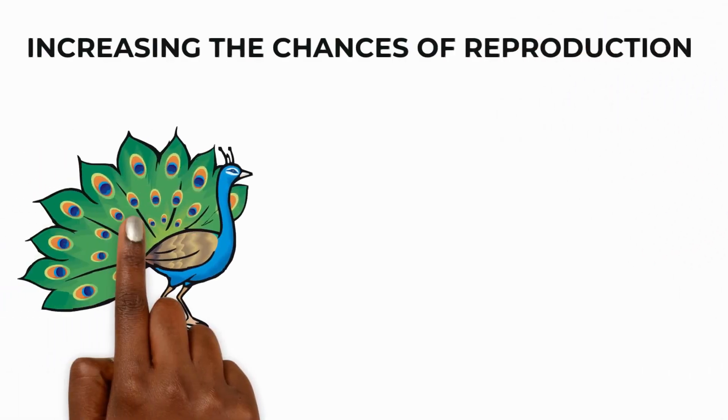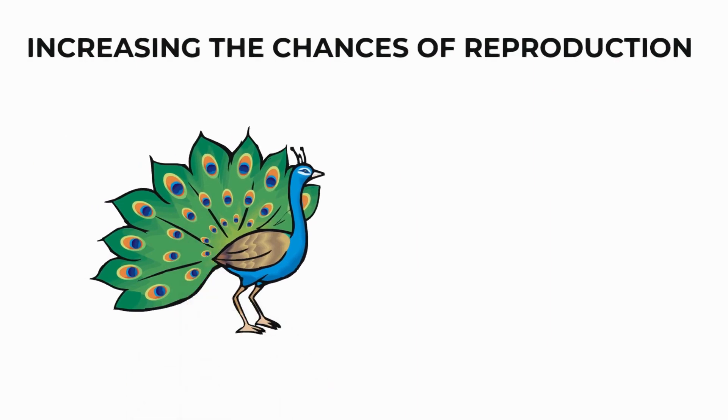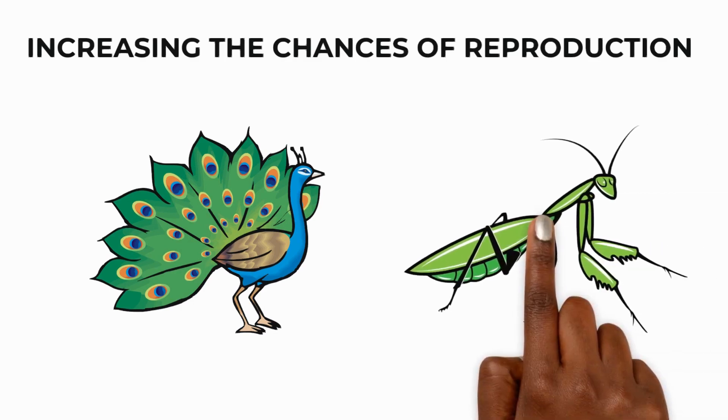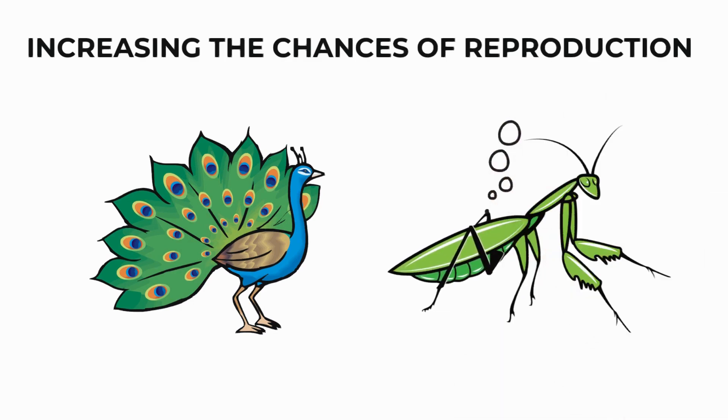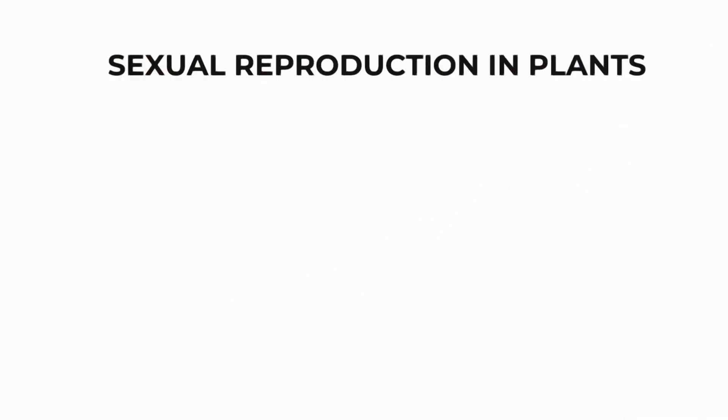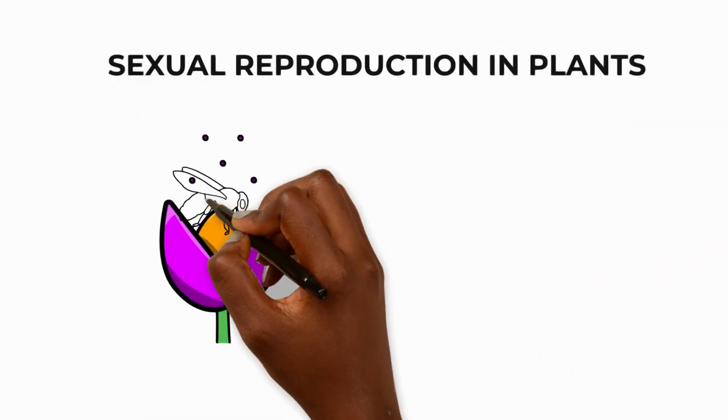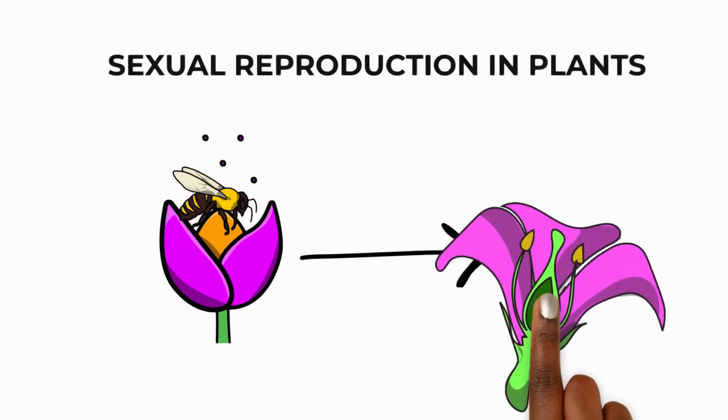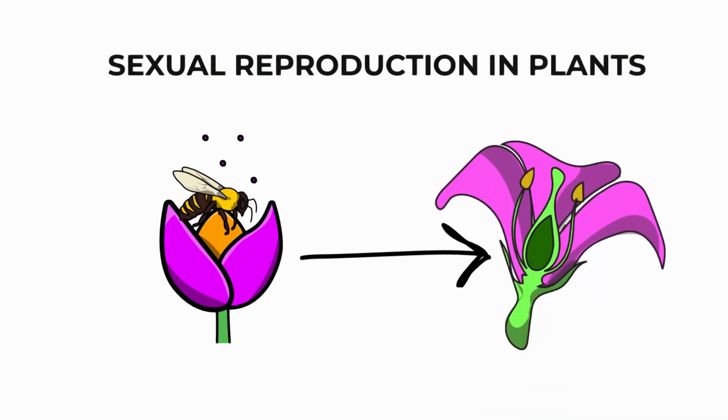Different animals have developed certain behaviours to increase their chances of reproducing. For example, male peacocks show off their tail feathers to attract females. And female praying mantises release chemicals to attract a mate. Plants also carry out sexual reproduction. The pollen from the male part of a flower travels to the female part and fertilises the eggs, resulting in seeds.